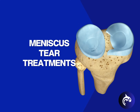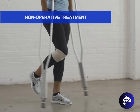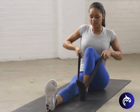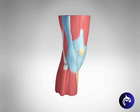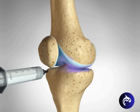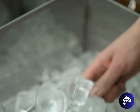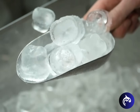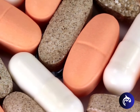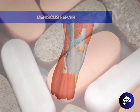Surgery is not required in all patients with a meniscus tear. Non-operative treatment often includes a period of rest, followed by a course of physical therapy. For some cases, an injection may be recommended to reduce pain and swelling. Icing and taking NSAIDs can help relieve pain and inflammation, while taking appropriate supplements for joint health may help the healing process.